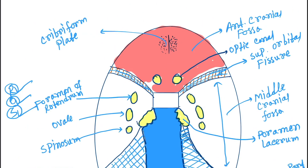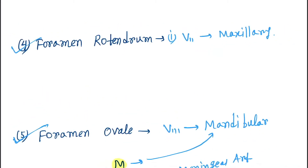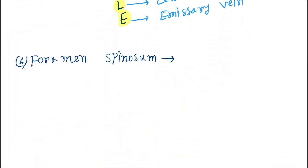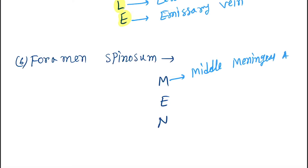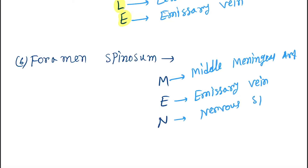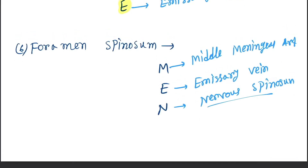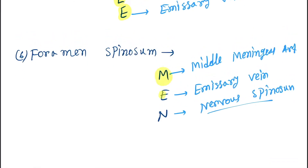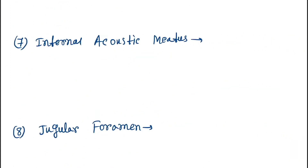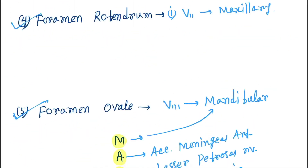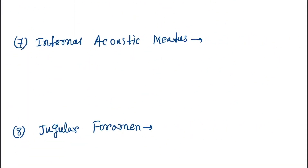Next is the foramen spinosum, located below foramen ovale. The structures passing through foramen spinosum can be remembered with the mnemonic MEN: M for Middle meningeal artery, E for Emissary vein, and N for Nervus spinosus.